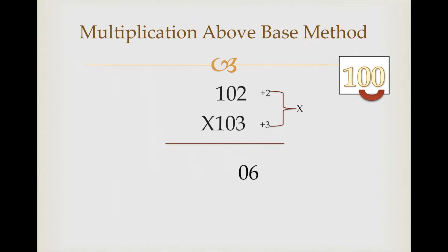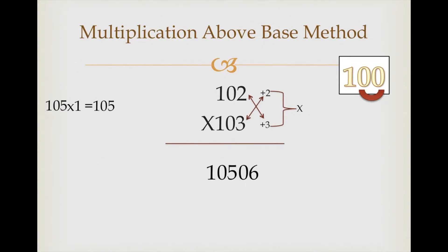Now cross check these two digits: 103 plus 2 makes 105, and 102 plus 3 also makes 105. Write down 105 and multiply by 1 because we considered base 100. 105 times 1 is 105. Our answer is 10506.